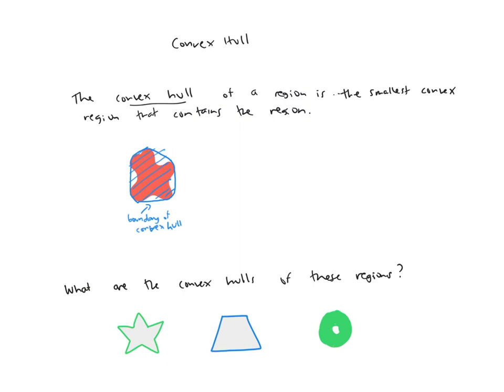Now intuitively, you can get the convex hull by imagining putting a rubber band around your original region and letting it go tight. The convex hull is going to be the region that's inside that taut rubber band.